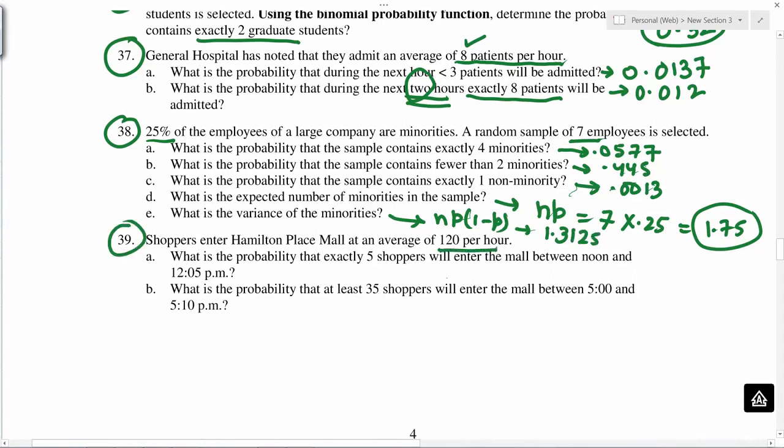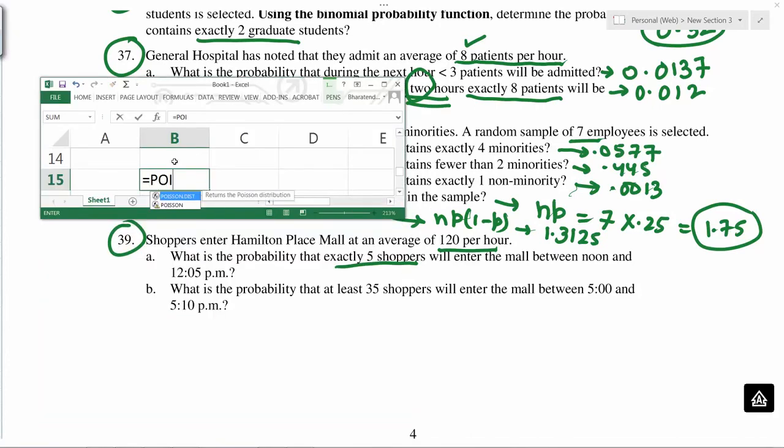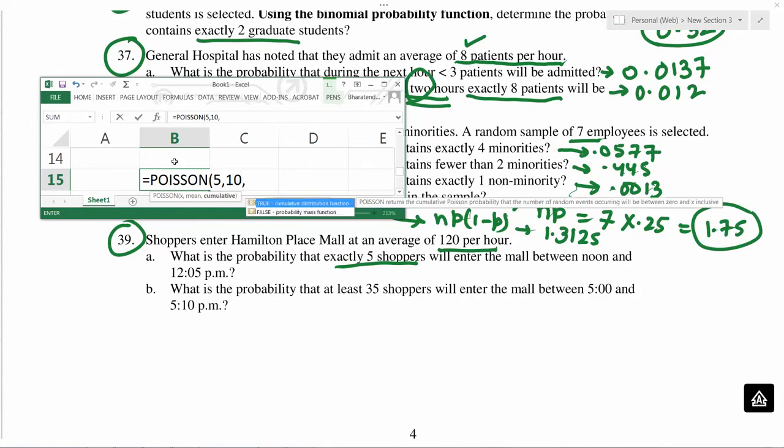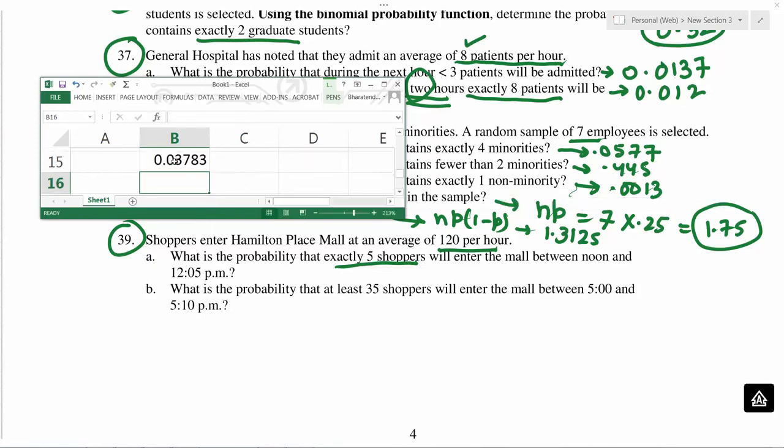120 per hour. What is the probability of exactly 5 within 5 minute interval? So this is a Poisson distribution. If in 60 minutes you have 120, then in 5 minutes you will have 10. In 5 minutes, equals Poisson. Exactly 5 means 5 here. Mean will be 10, because if 120 people come in one hour, then 10 shoppers are expected in 5 minutes, and false.